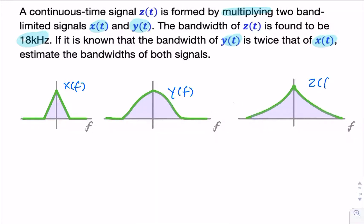and z of f. Now, we're told that these signals are multiplied, but we assume that this multiplication is happening in the time domain, because we're given the signals in the time domain. That would correspond not to multiplication here, but to convolution. We're convolving in the frequency domain.